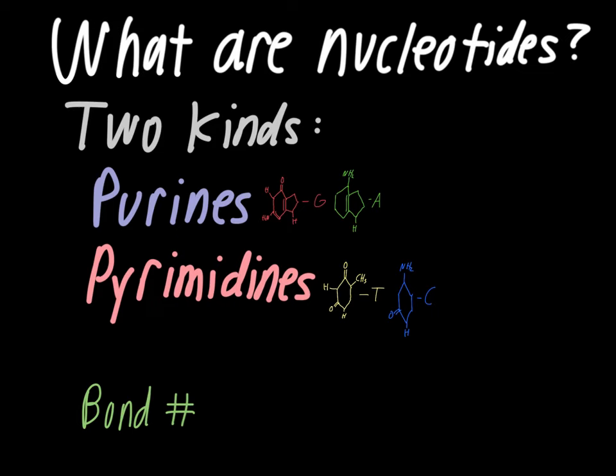As we said earlier, G always pairs with C — the car goes in the garage — so you end up with one purine and one pyrimidine pairing together. And the apples go in the tree, so adenine always pairs with thymine — again, one purine pairing with one pyrimidine.